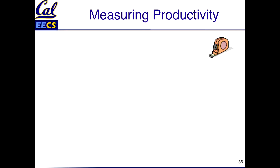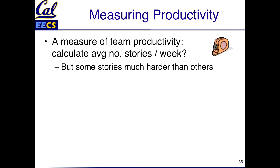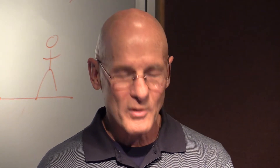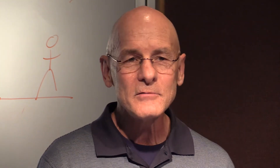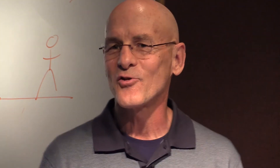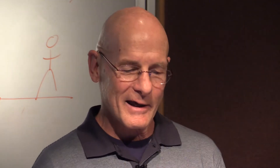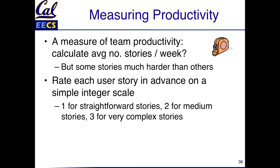In measuring productivity, if we try to use user stories per week, the problem is some of them are much harder than others. If you got one hard user story done versus three simple ones, are you doing well or not? The solution: we'll just assign points to each user story — one for straightforward, two for medium, and three for complicated. That's the big idea.